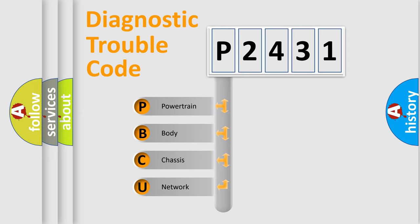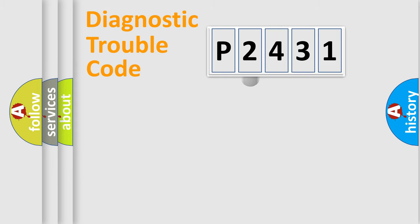We divide the electric system of an automobile into four basic units: Powertrain, Body, Chassis, and Network. This distribution is defined in the first character code.